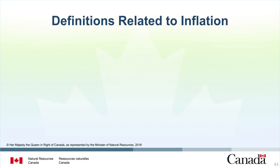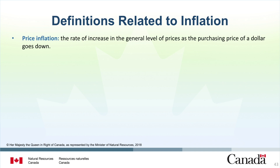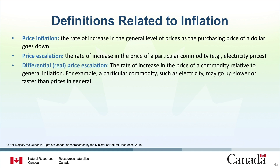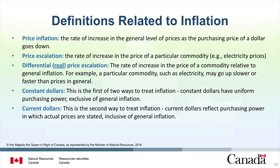Let's define five key terms related to inflation. Price inflation is the rate of increase in the general level of prices. Price escalation is the rate of increase in the price of a commodity, for example electricity prices. Differential or real price escalation is the rate of increase in the price of a commodity relative to inflation. Constant dollars are dollars of uniform purchasing power, exclusive of general inflation. And current dollars are dollars of purchasing power in which actual prices are stated, inclusive of general inflation.